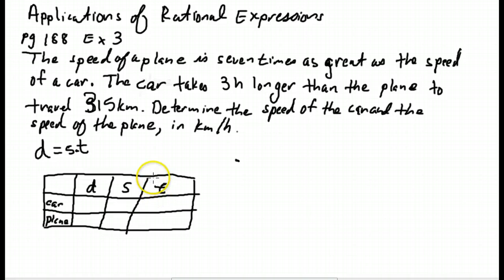What goes where? Well, generally, look at the last sentence of a word problem. Determine the speed of the car and the speed of the plane in kilometers per hour. So we want to know the speed of the car and the speed of the plane. So let's call the speed of the car C. And the speed of the plane is seven times as great, so it's 7C. That's our variable.